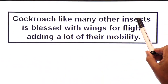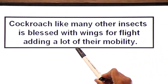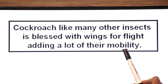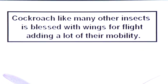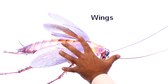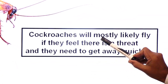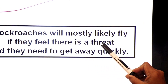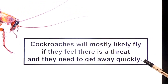Cockroaches, like many other insects, are also blessed with wings for flight, adding a lot to their mobility. Look at this diagram — here you can see the wings of cockroach. Cockroaches will most likely fly if they feel there is a threat and they need to get away quickly.